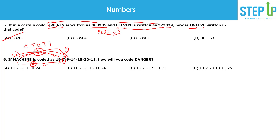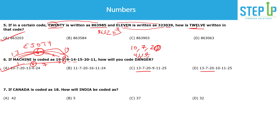So for D-A-N: D is place value 4, A is 1, N is 14. Adding 6 to each: 4+6=10, 1+6=7, 14+6=20. The code for DAN would be 10, 7, 20. Checking the options — that matches one answer. So the rule is simply: take each letter's place value and add a constant (here, 6) to get the coded number.